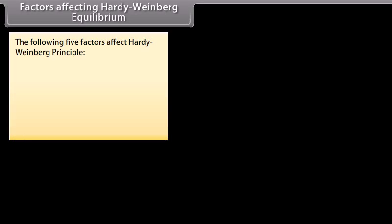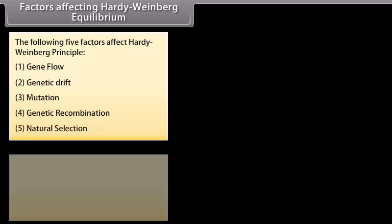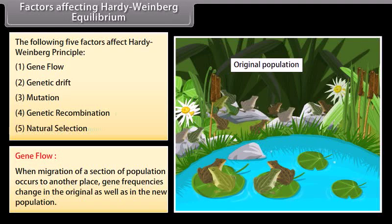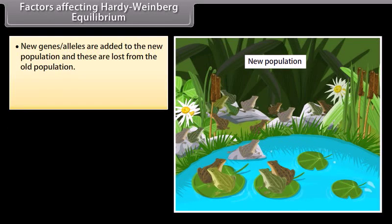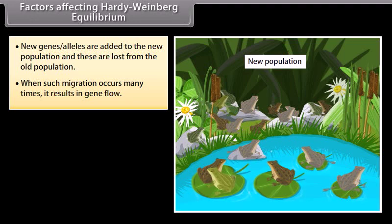Five factors affect the Hardy-Weinberg Principle: 1. Gene Flow, 2. Genetic Drift, 3. Mutation, 4. Genetic Recombination, and 5. Natural Selection. Gene flow occurs when migration of a section of a population occurs to another place, causing gene frequencies to change in the original as well as the new population. New genes and alleles are added to the new population and lost from the old population; when such migration occurs many times it results in gene flow.